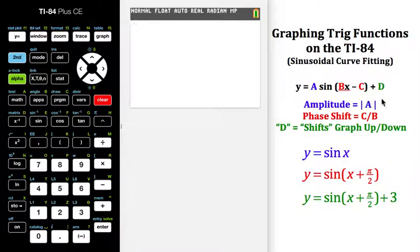Let's take a look at a generic trig equation: y equals A sine of (Bx minus C) plus D. I've color-coded this. If you take the absolute value of A, that gives you the amplitude of your trig function.